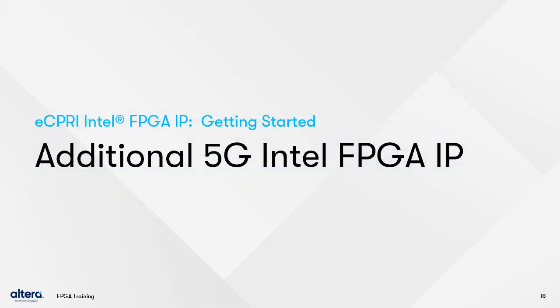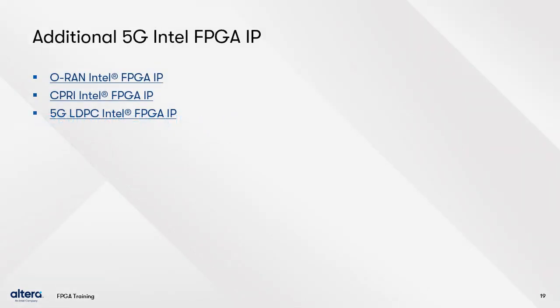For our last section in this course, we want to highlight the other IP available for 5G RAN solutions. Altera offers an available O-RAN IP core, supported on the same device families as the eC-PRE IP. There is also the C-PRE IP, supported in many Altera devices including the ones mentioned previously, and it can connect to the eC-PRE IP when IWF Type 0 is enabled. Lastly, there is the 5G LDPC IP for encoding and decoding data streams in 5G wireless transmission channels. Use the links on this page to access documentation on these IP cores.